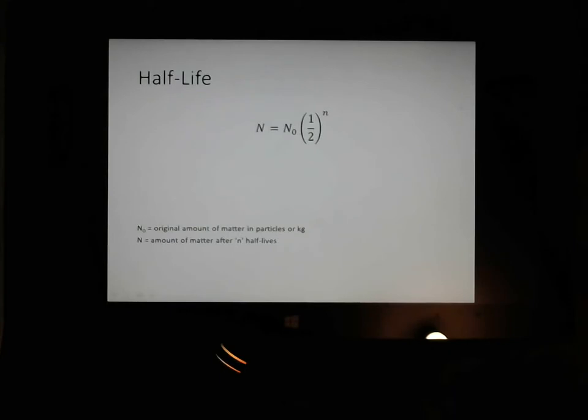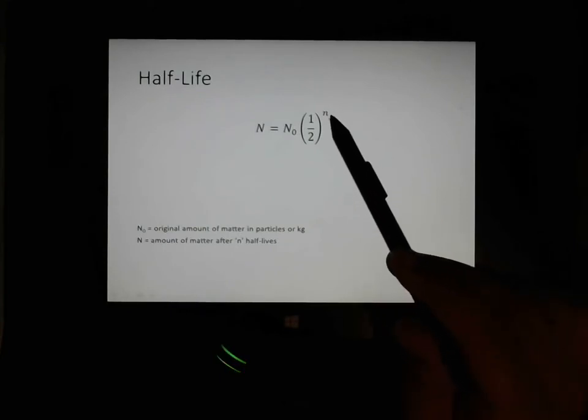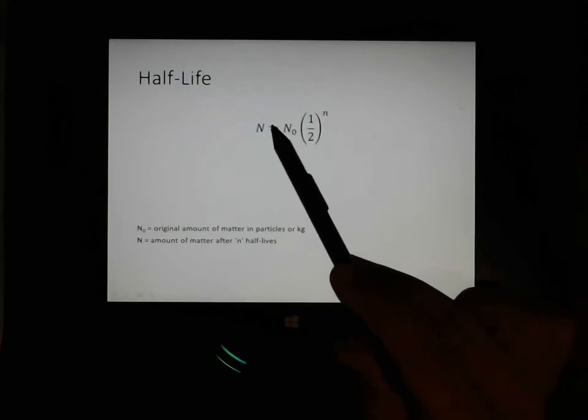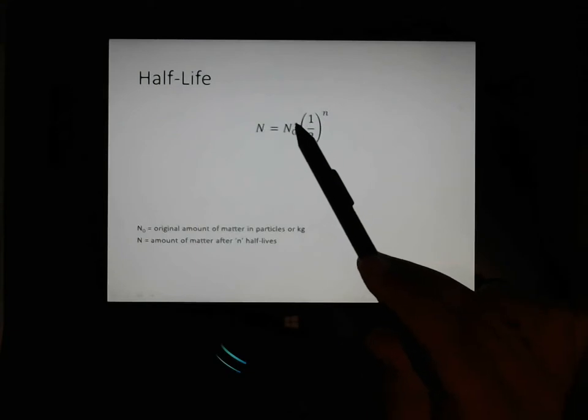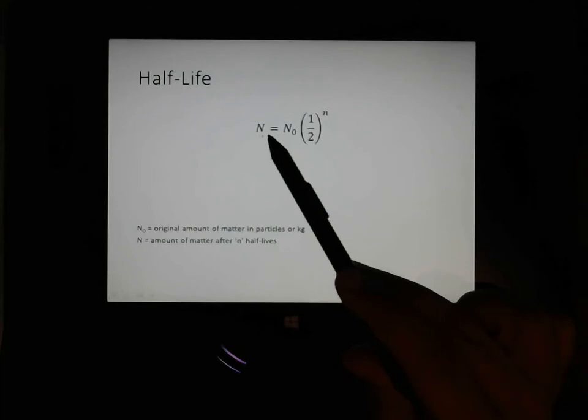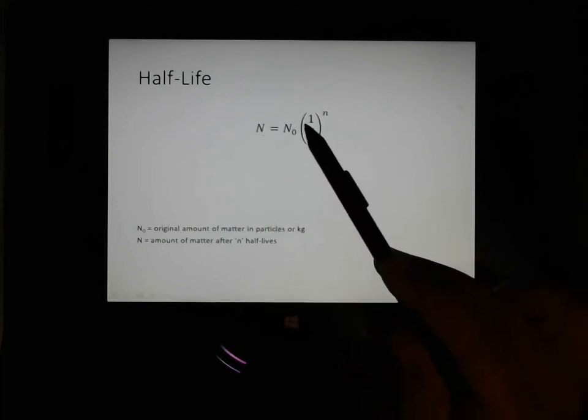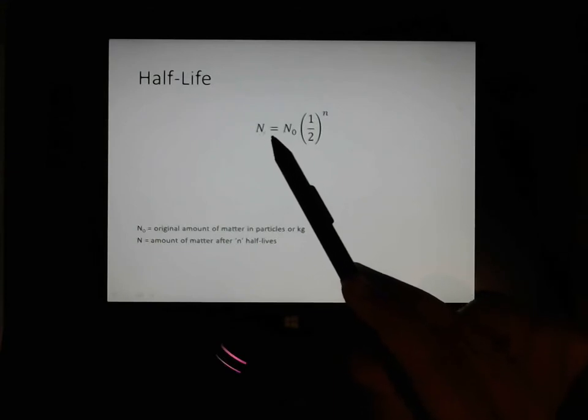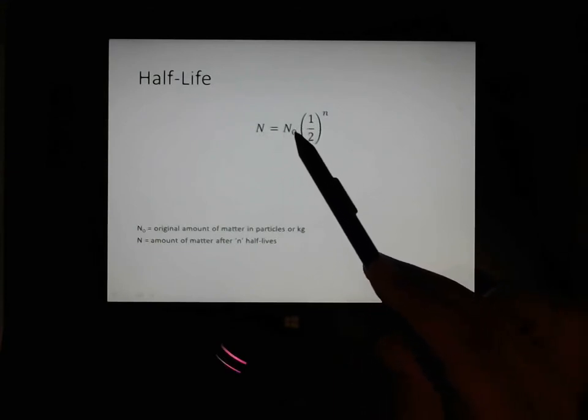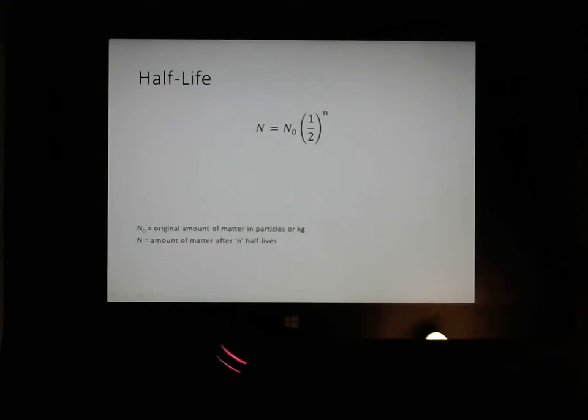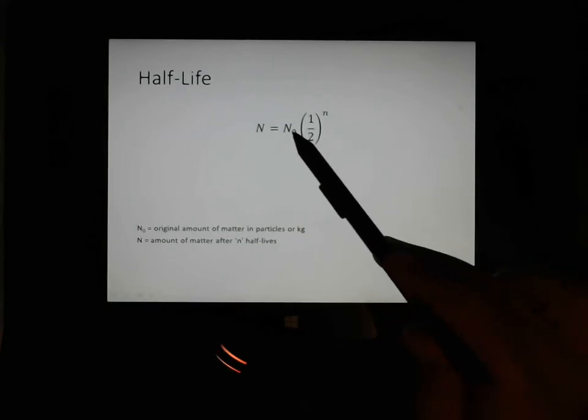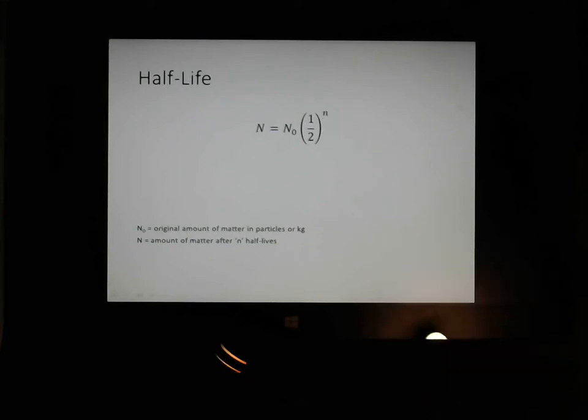Alright, so there is a half-life formula that you're expected to be able to use. N in this case, this little n, is the number of half-lives. Now, this N-naught and N, capital N, these are fairly important. Because N-naught could be the number of atoms, in which case N will be a reference of the number of atoms. Here I've said particles. You could do it in kilograms, and it then would have some value in kilograms. You could also do it in an activity. So if it's saying that the activity is 5,000 becquerels, which is 5,000 decays per second, then the ending would be in some value of becquerels.